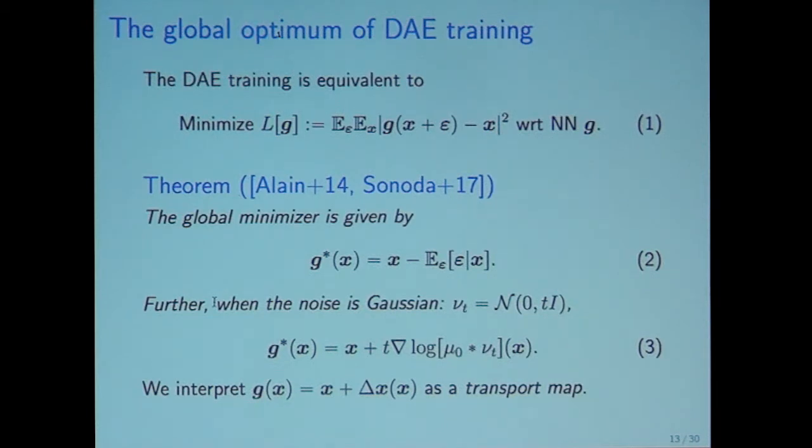The theorem is that the global minimizer is given by equation two. In particular case, when the noise is Gaussian, then the minimizer is given in three. In the transportation analysis, we interpret this as G(x) equals x plus delta x. We regard this as a transport map.